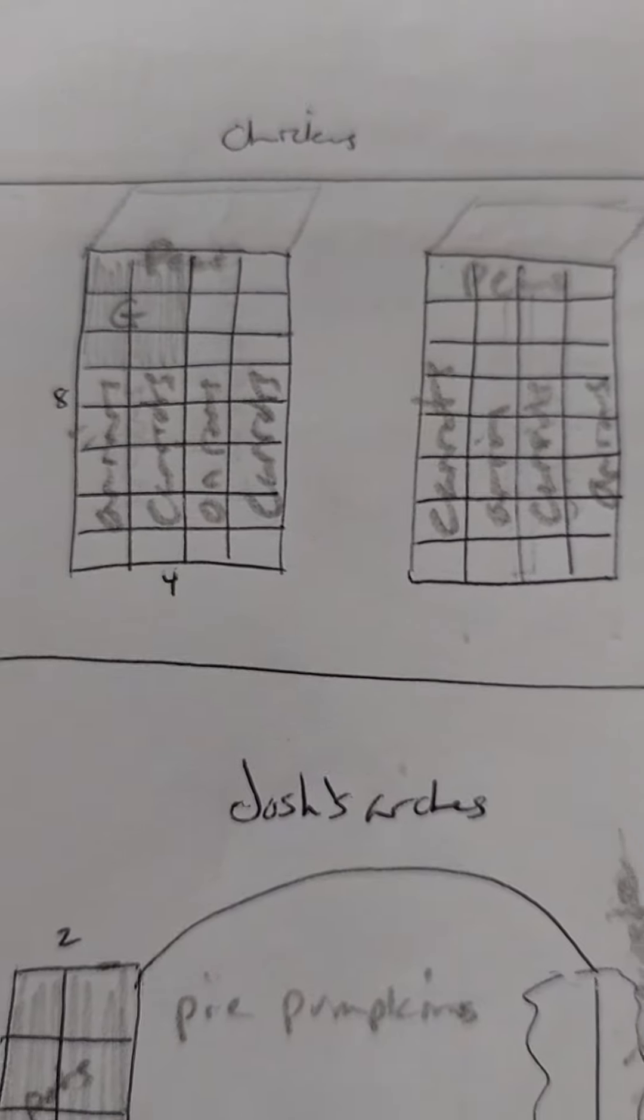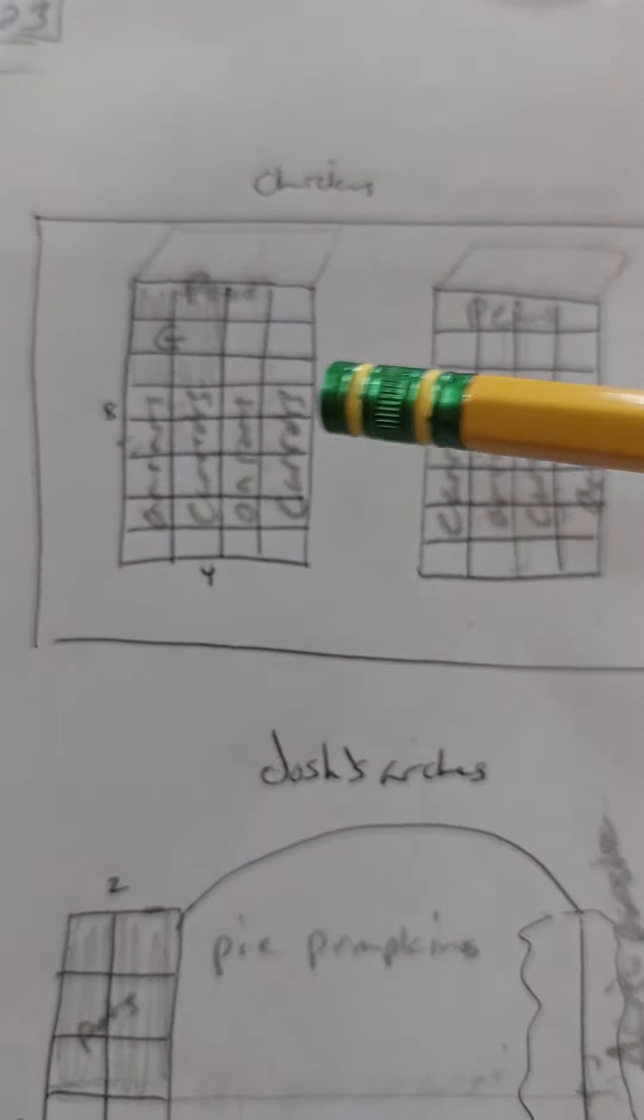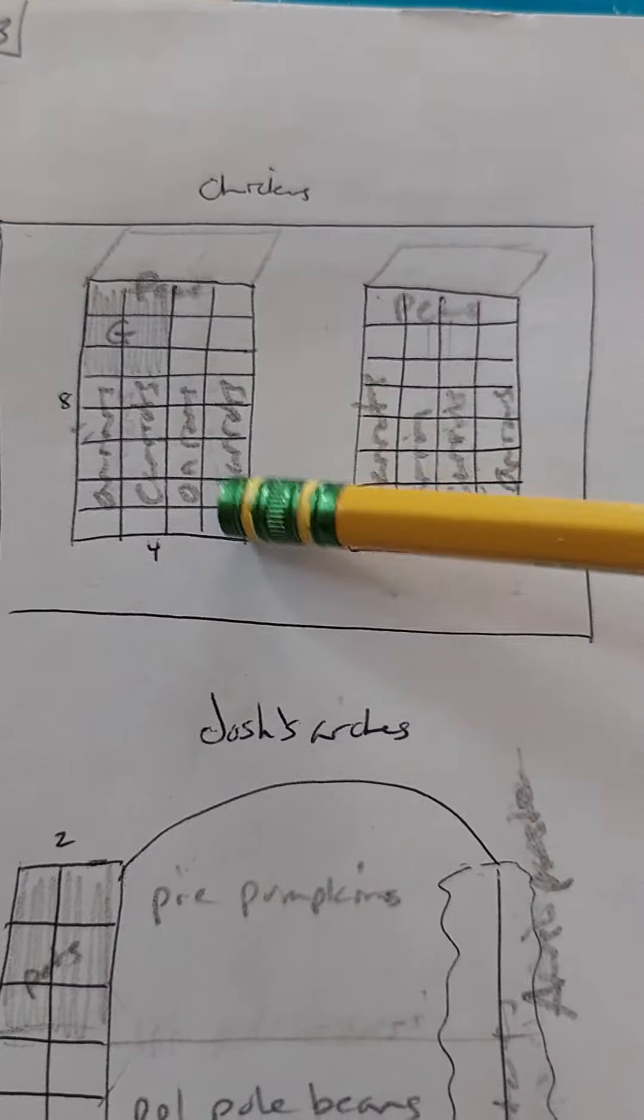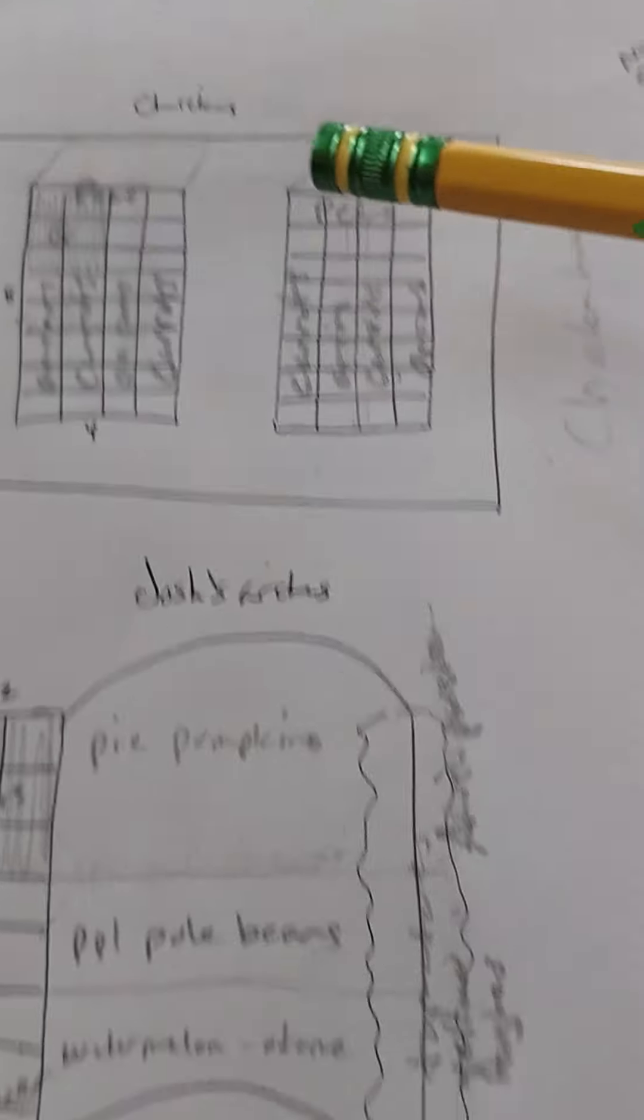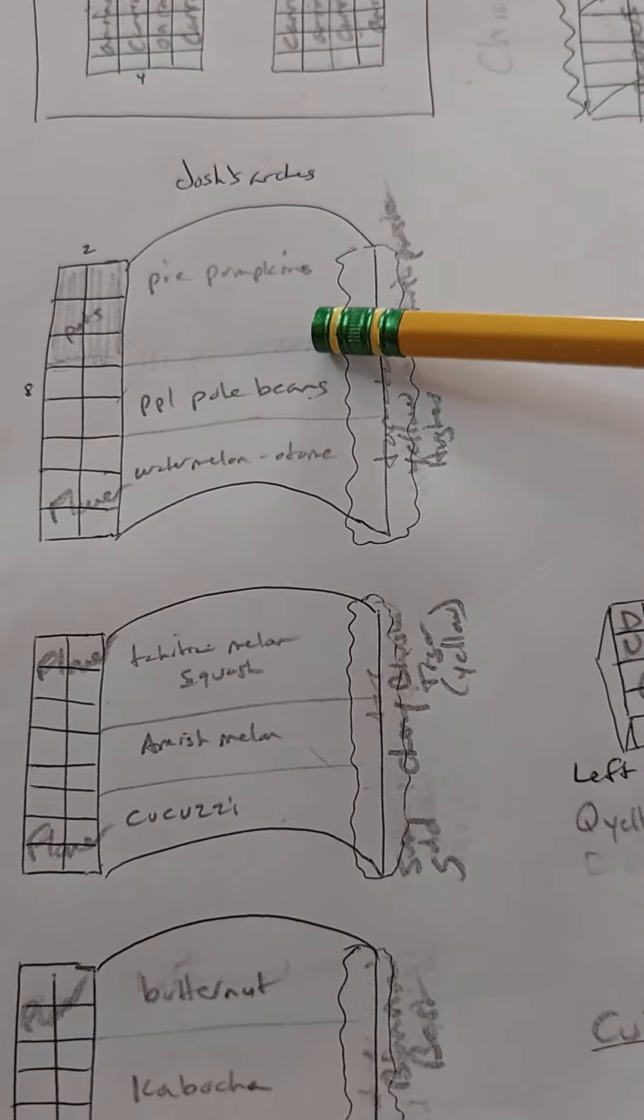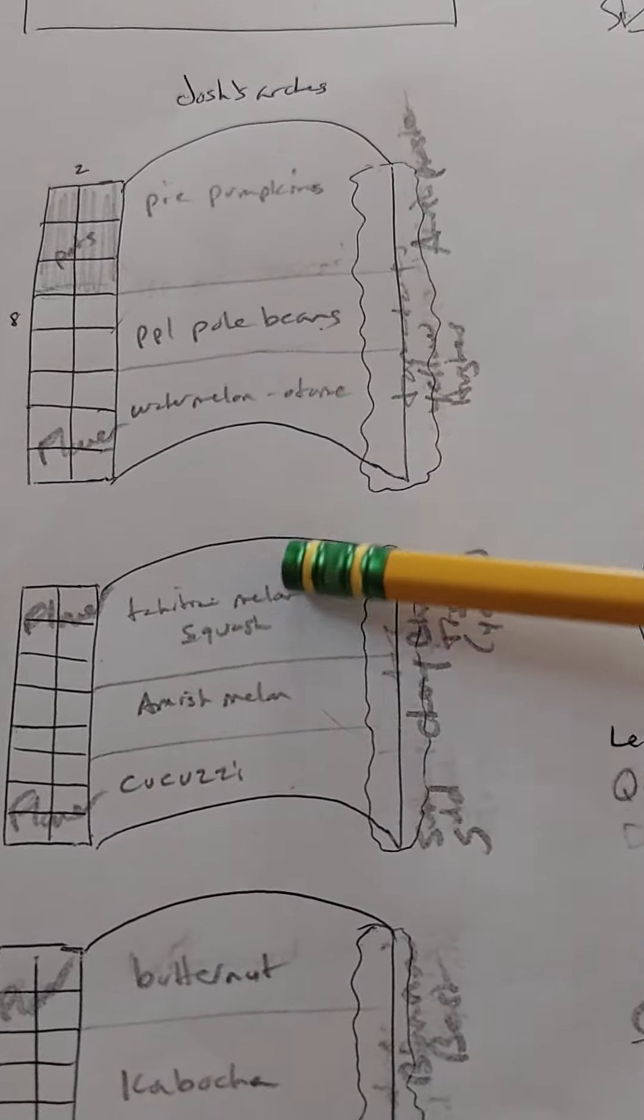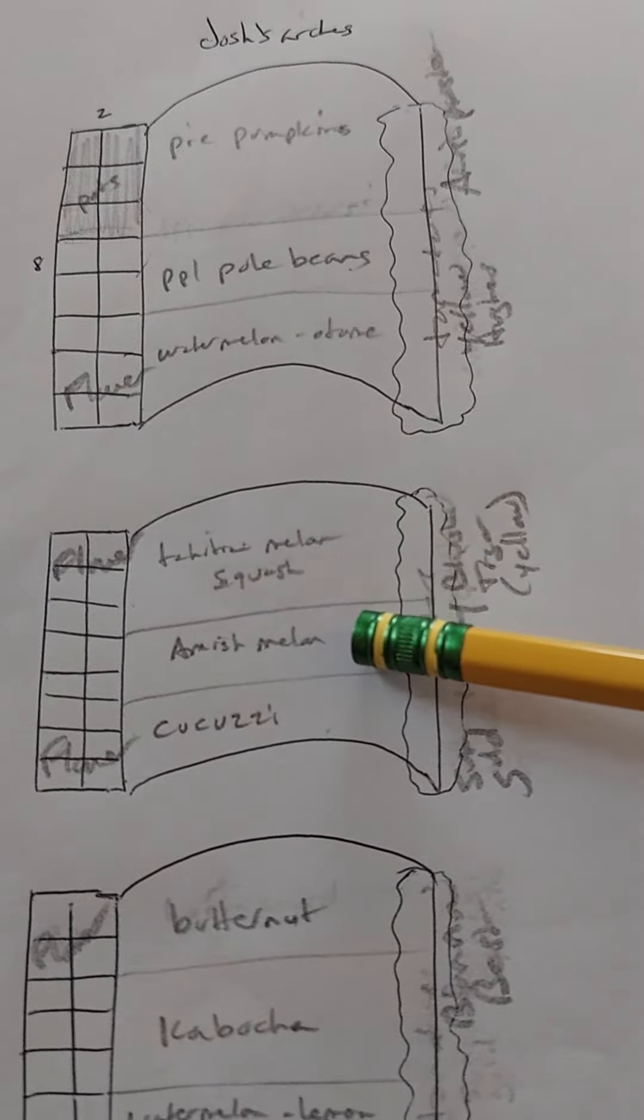All right, I think I got things planned out. Onions, carrots in rotation lines this way, and then peas in the back. I'm gonna make some trellises for Josh's arches. I've got pie pumpkins, pole beans, watermelon, Tahitian melon, squash.